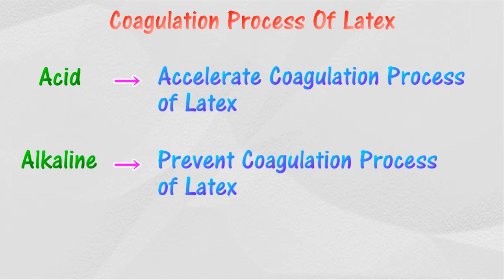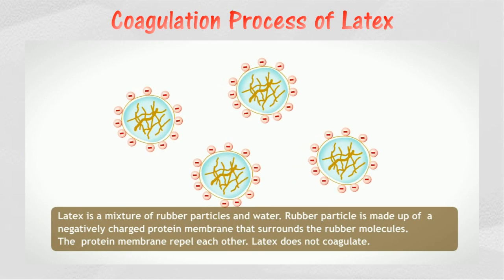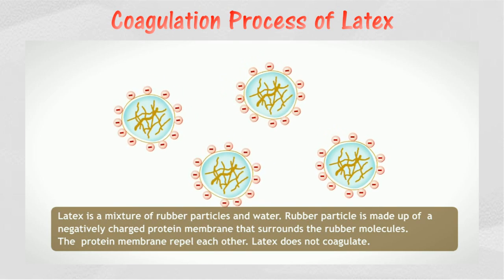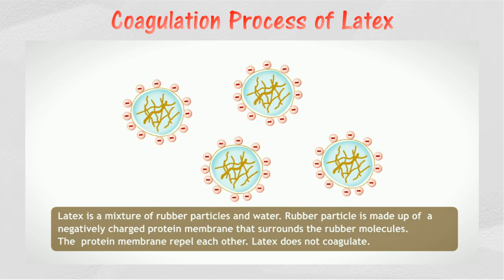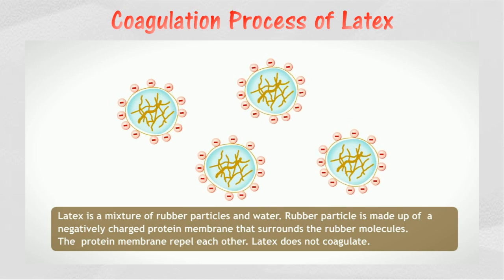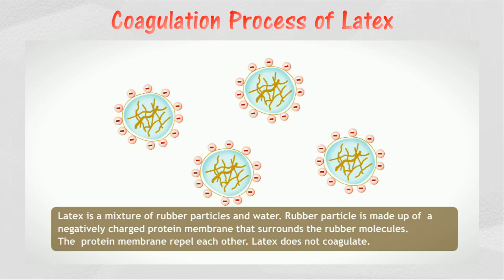Alkaline solutions such as ammonia solution can prevent the coagulation of latex. The positively charged hydrogen ions produced by bacteria can be neutralized by the negatively charged hydroxide ions from the ammonia solution. In rubber latex, rubber molecules in small groups are encompassed by negatively charged cell membrane proteins. These protein membrane colloid particles repel each other, preventing the rubber polymer molecules from coming together to become one big lump.